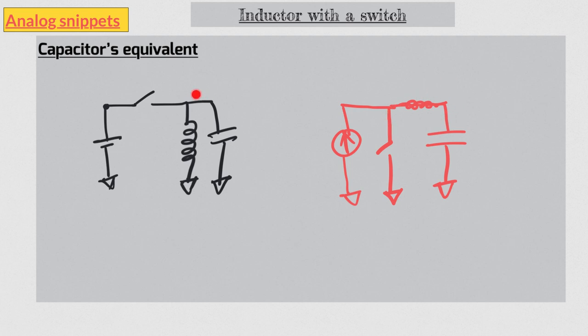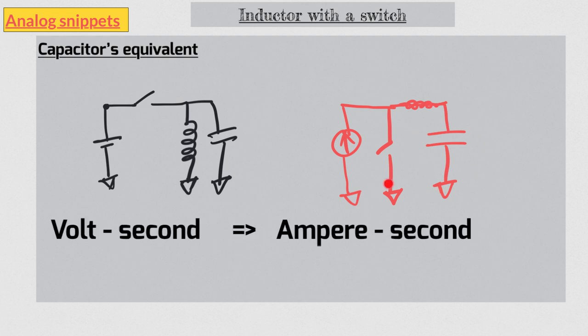Volt second balance of an inductor is equivalent to current second balance of a capacitor. This ampere second balance is better known as the charge balance of the capacitor. And it means that in steady state the total charge in and out of capacitor should be zero. Otherwise capacitor will keep building the voltage.